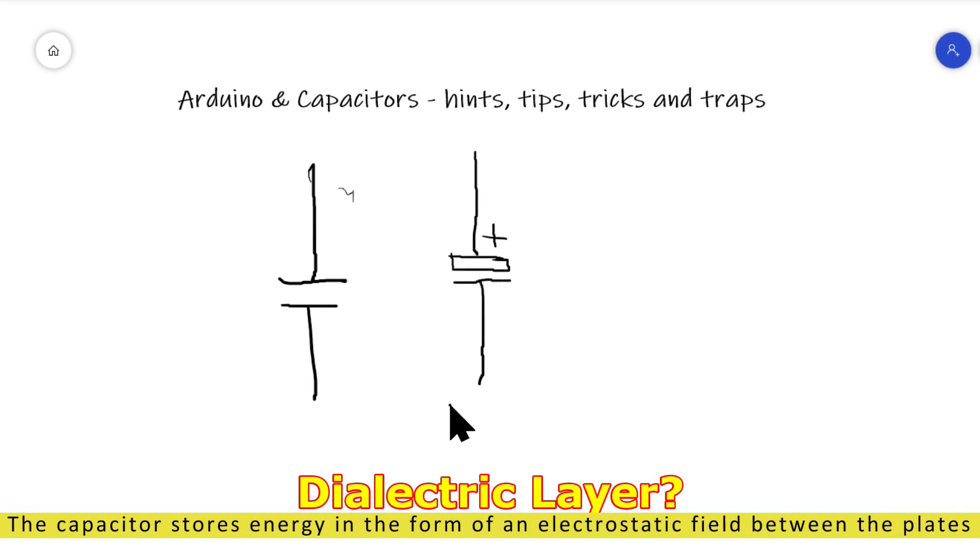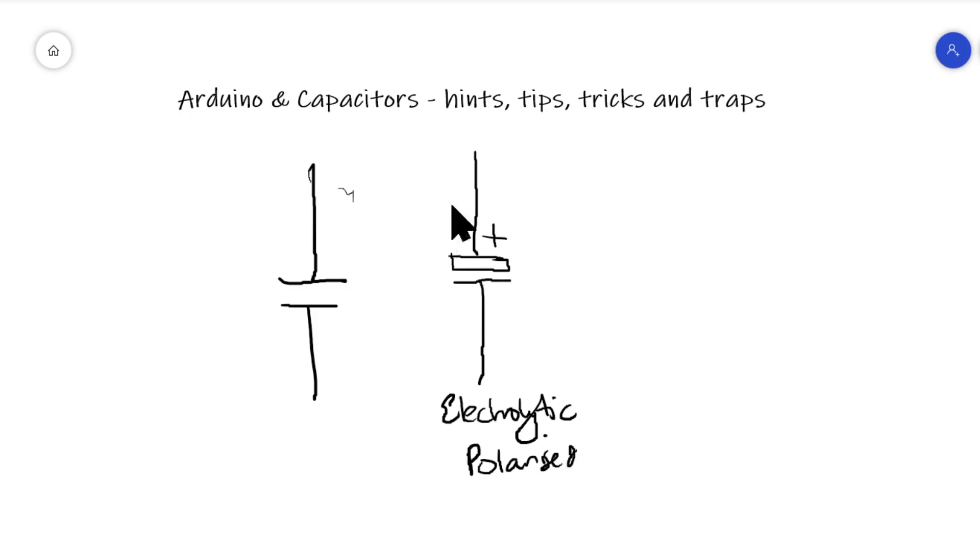Now, the difference between this is that this is an electrolytic capacitor and it's polarized. That means the positive plate here must be kept positive in relation to this one. It doesn't mean this has to go down to ground, but it must not be more positive than this side or bad things will happen.